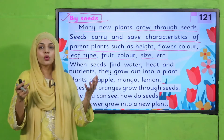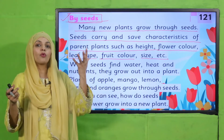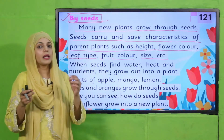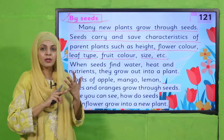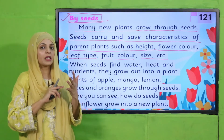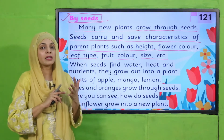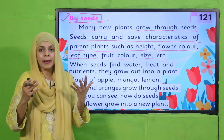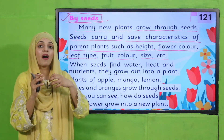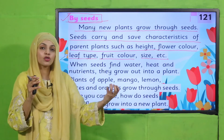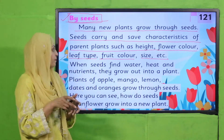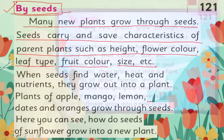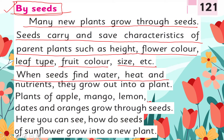The same kind of apples will grow from that seed — same color of apple fruit, same leaves, same stem. So they will be the same. These characteristics are passed through the seed. When seeds find water, heat, and nutrients, they grow out into a plant.